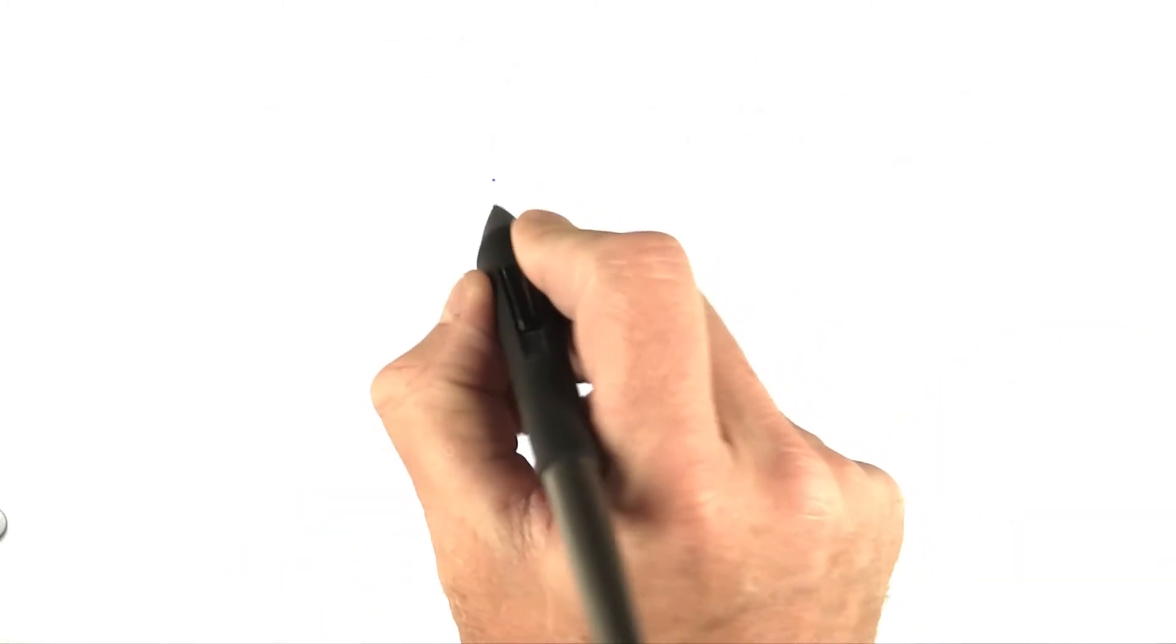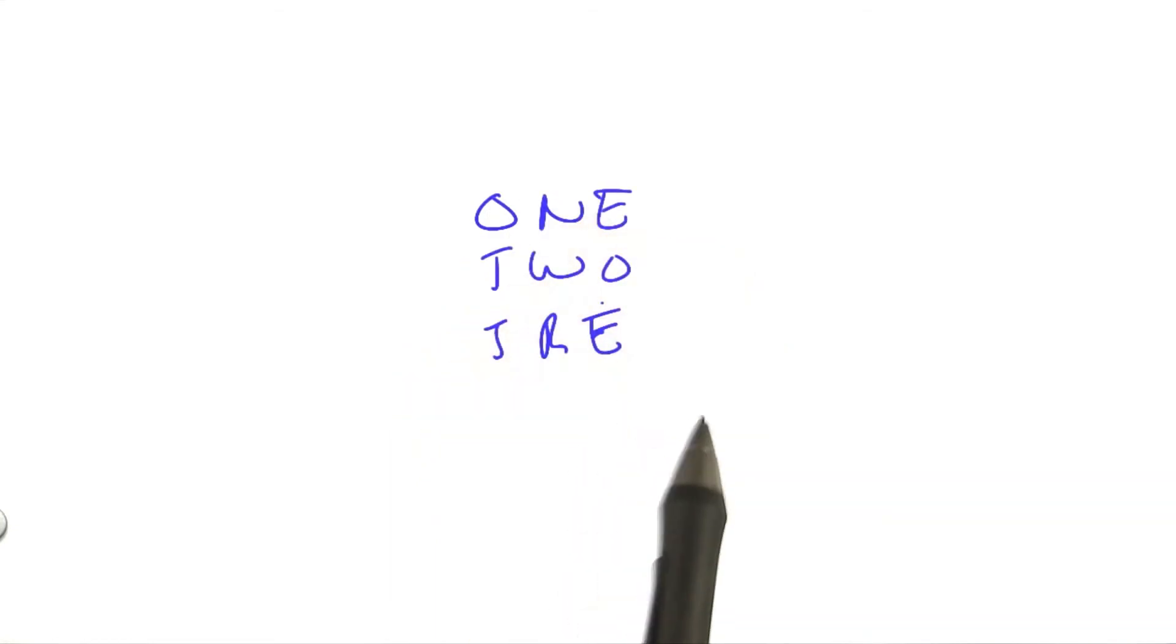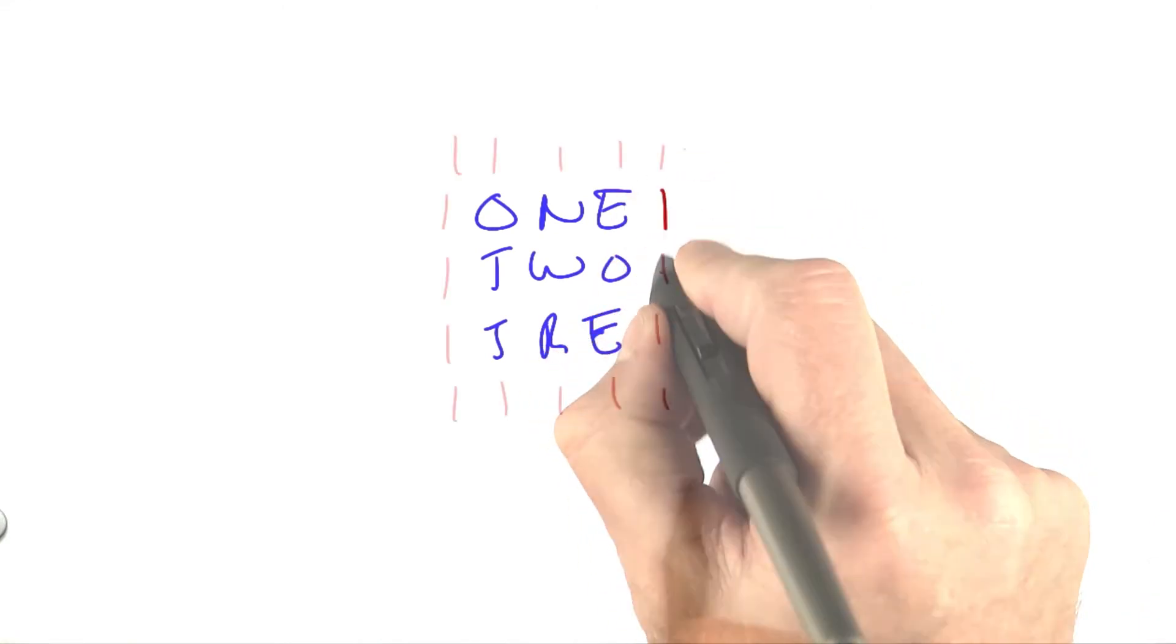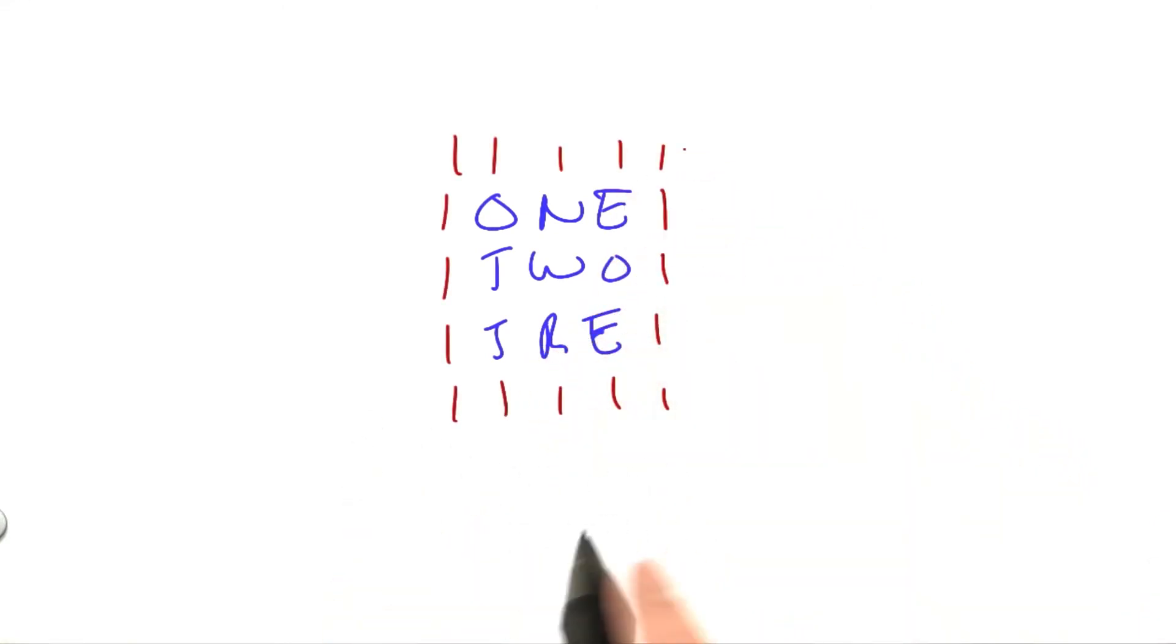So let's do an example of this representation. Here's a simple board. It looks like that. Now we want to add on border cells. So we'll do that all around. It looks like that. Now we just put that together into a string, and so the final string would look like this.